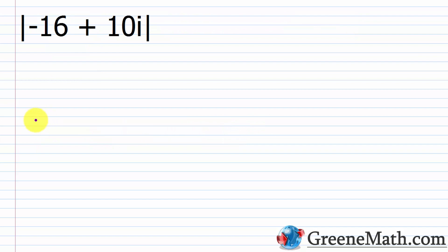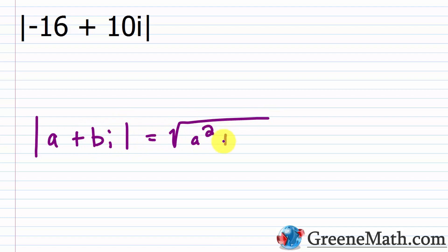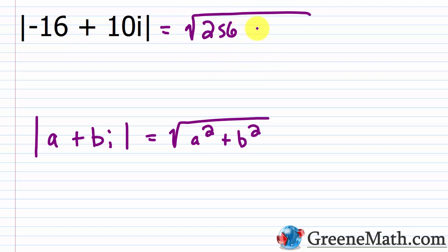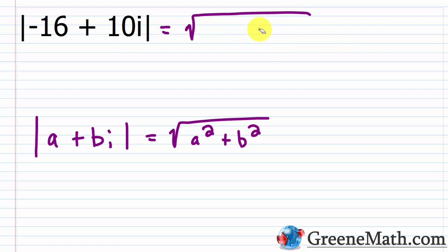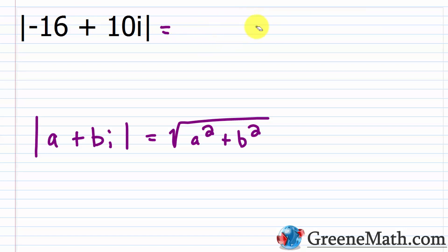For the absolute value of negative 16 plus 10i: a is negative 16, negative 16 squared is positive 256; b is 10, 10 squared is 100. 256 plus 100 is 356. So we need the square root of 356. Now 356 is 4 times 89. Since 4 is a perfect square, we can write this as 2 times the square root of 89. And since 89 is a prime number, we can't simplify any further — the answer is 2 times the square root of 89.